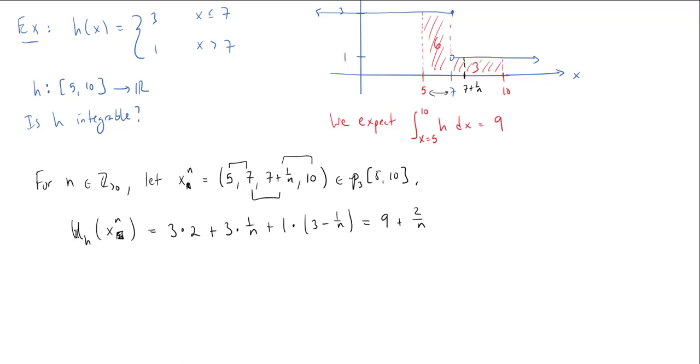Now let's try to compute lower sums. This time, instead of using this x_n, I'm going to pick a very specific partition that's even easier. Let's let w be the partition that doesn't even have this extra 7 + 1/n bit. I'll just go 5, 7, 10. This is now just a 2-partition of [5,10].